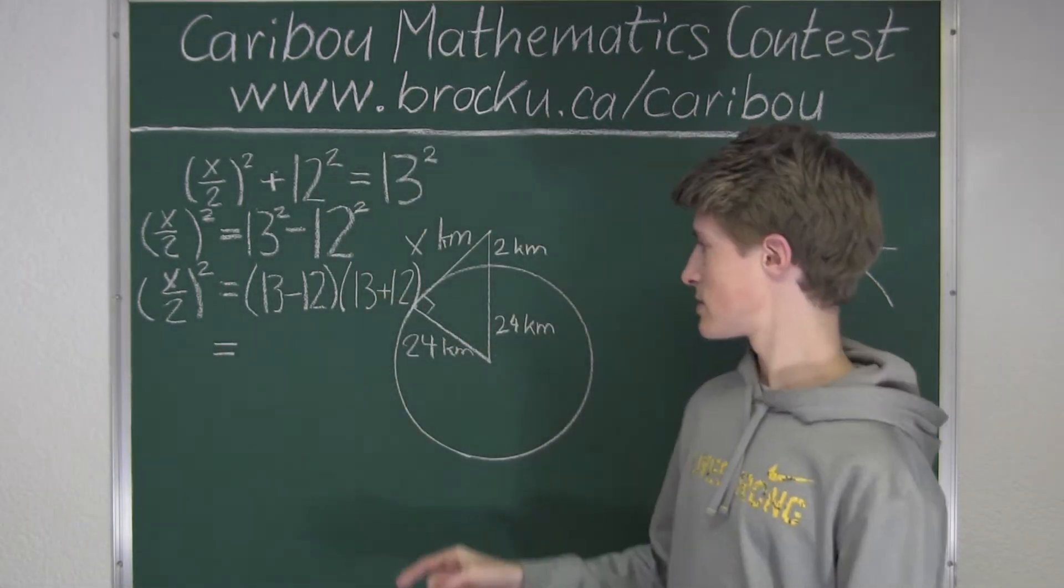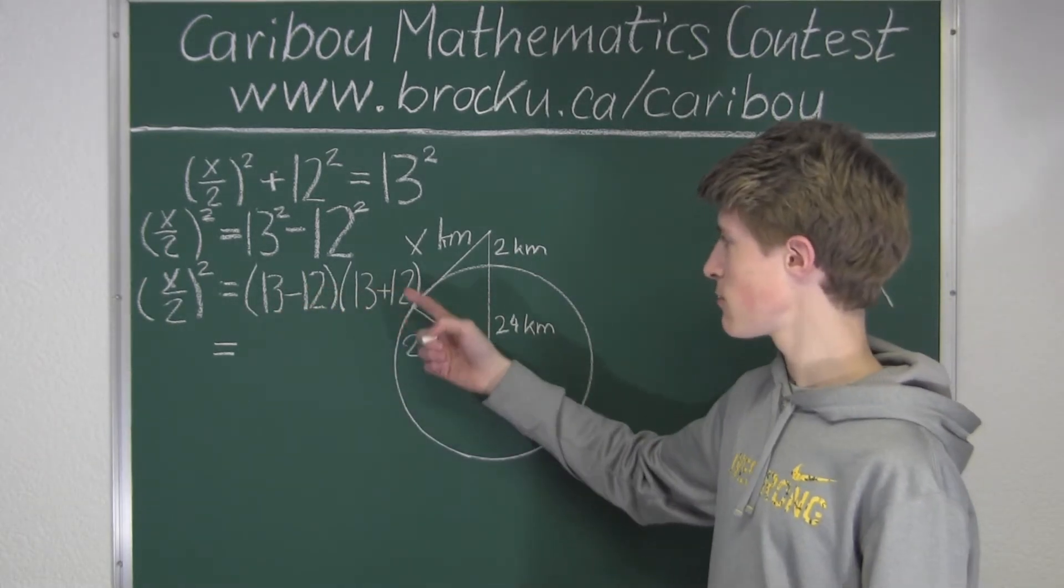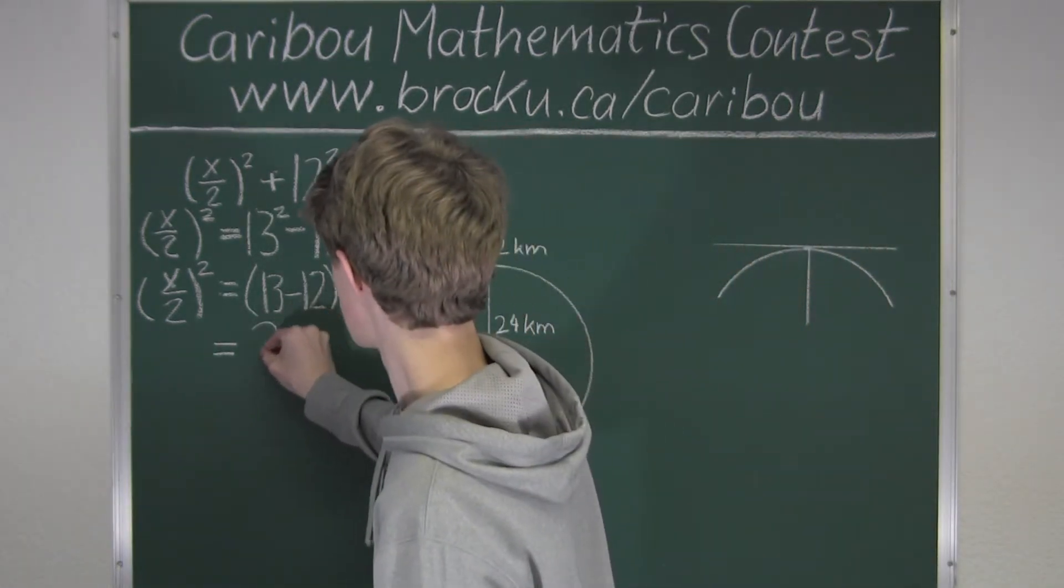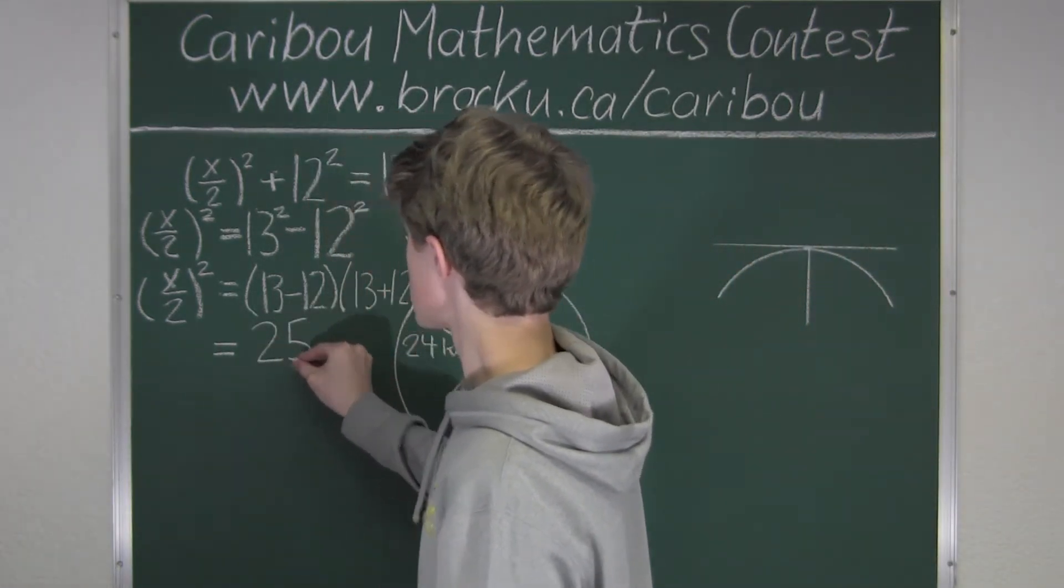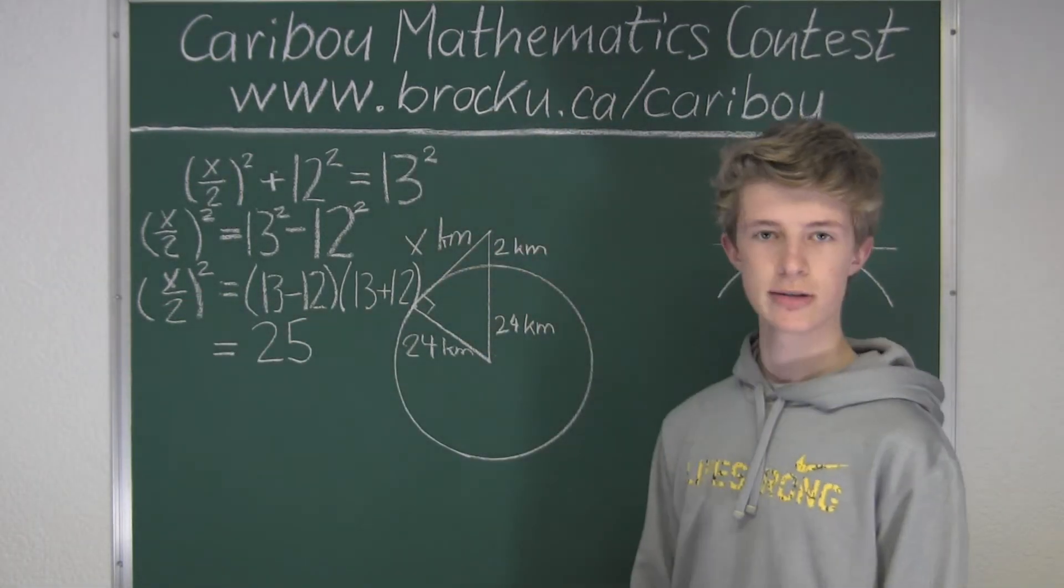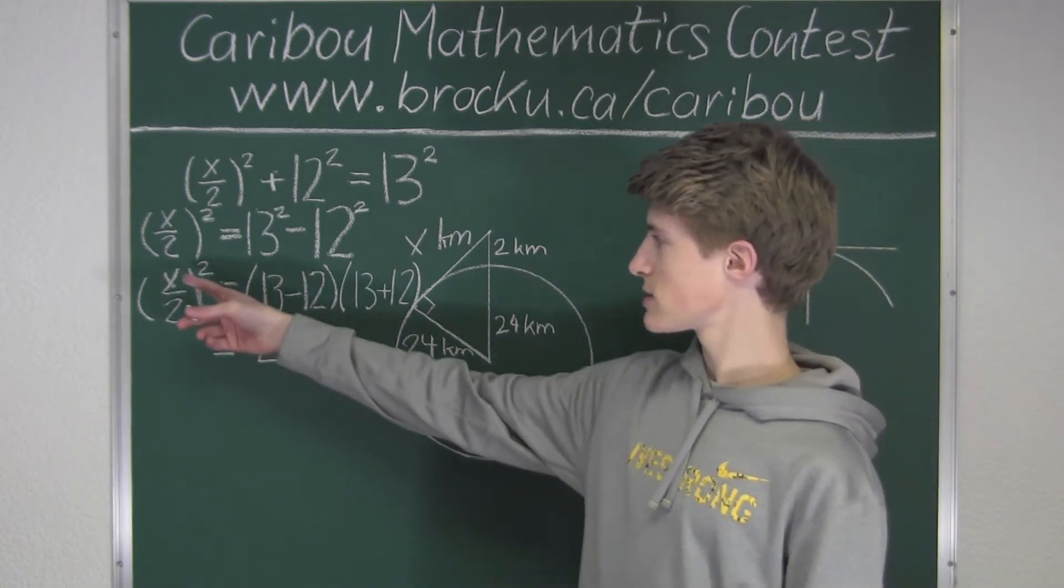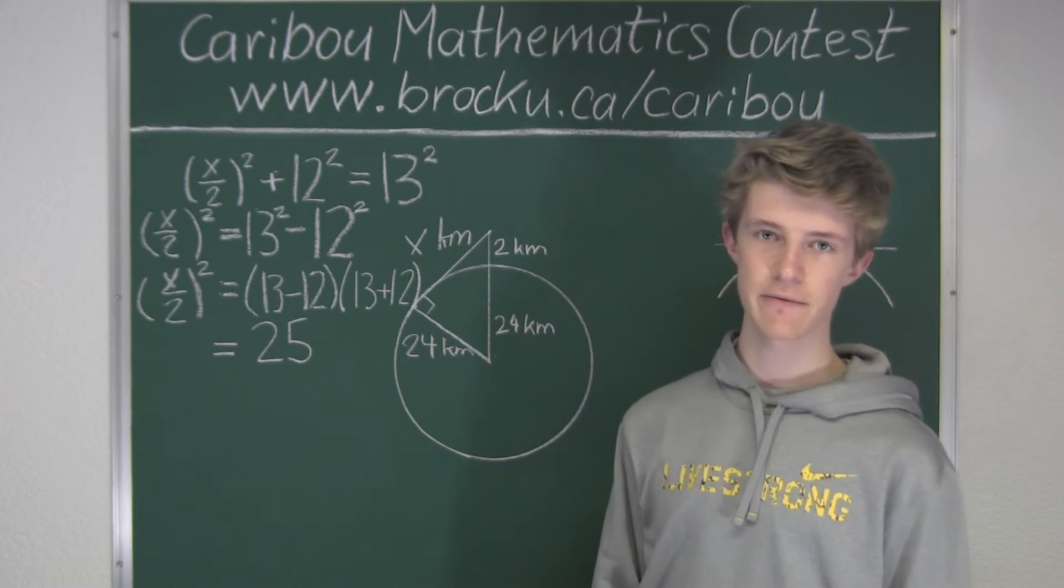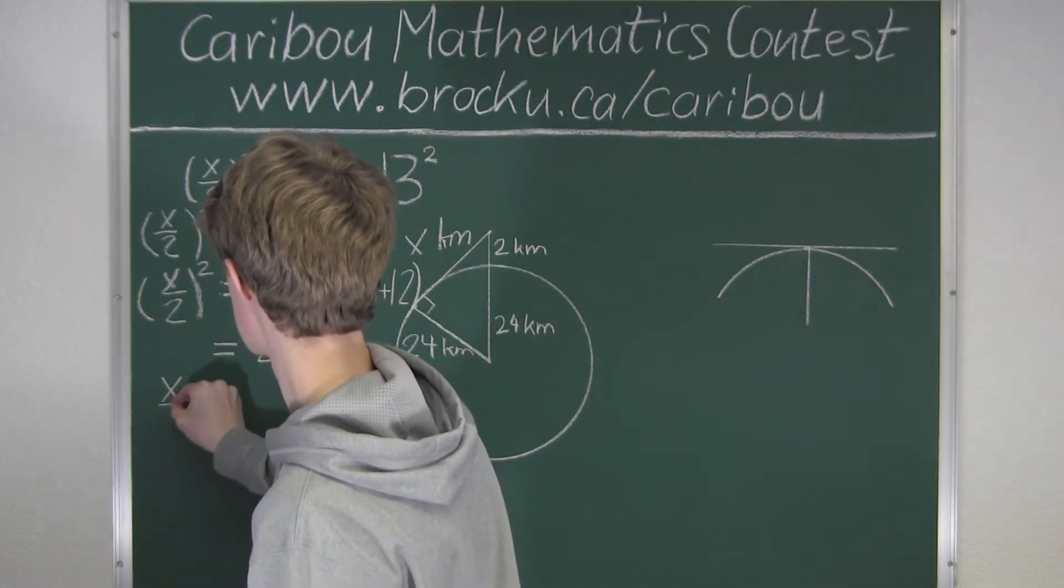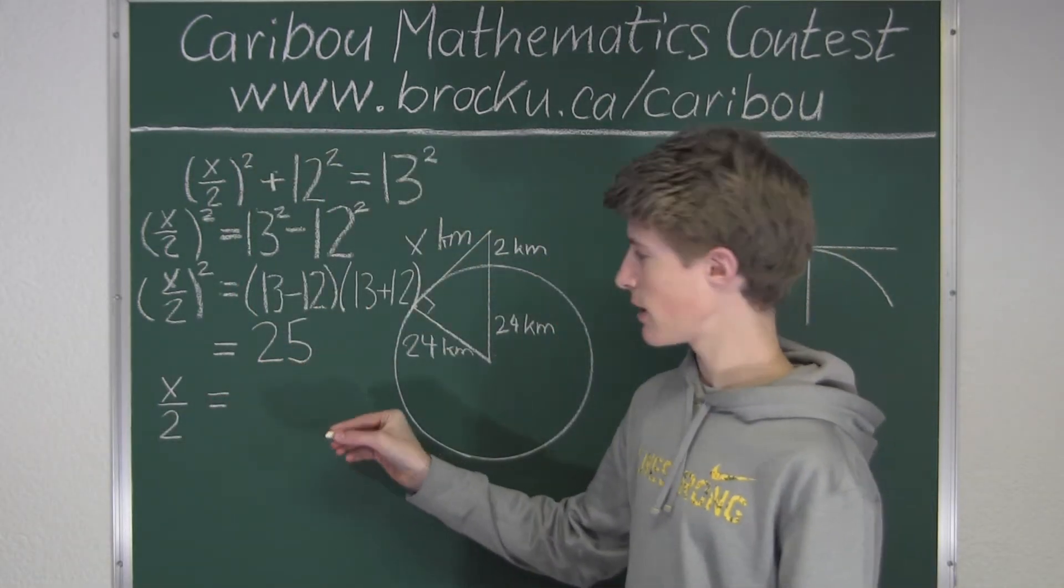Okay, so now we know that this is equal to 13 minus 12, which is 1, times 13 plus 12, which is 25, so 1 times 25 is 25. So we know that (x over 2) in brackets squared is equal to 25, so now to just get x, we will find the square root of both sides. So of course, on the left side, we will just have x over 2, and the square root of 25 is 5.